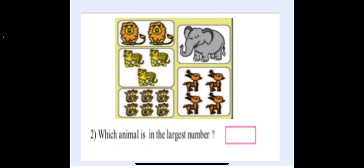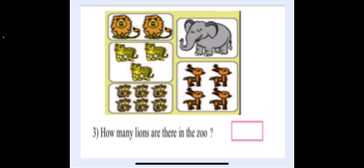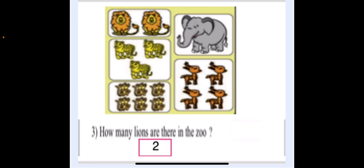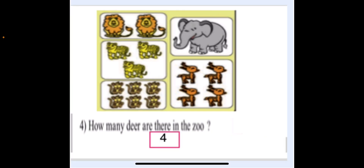Our second question is: which animal is in the largest number? Largest number means more in number — and the answer is monkey. Our third question is: how many lions are there in the zoo? Count the number of lions — one, two — so there are two lions. Our fourth question is: how many deer are there? One, two, three, four — so there are four deer in the zoo.